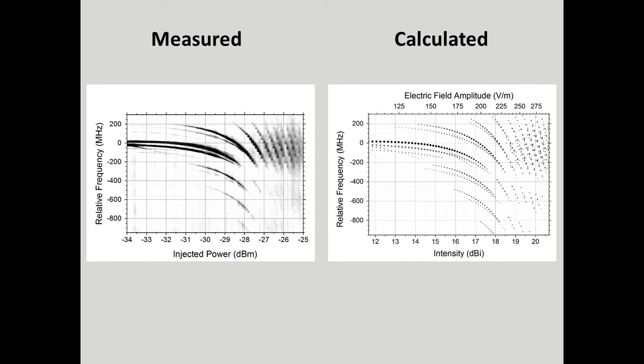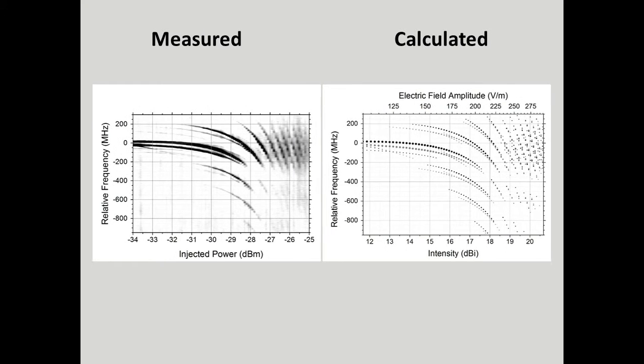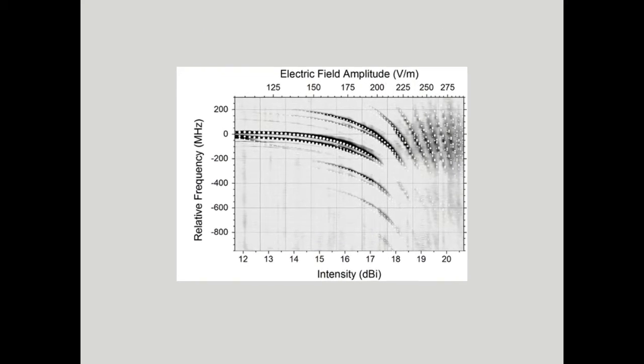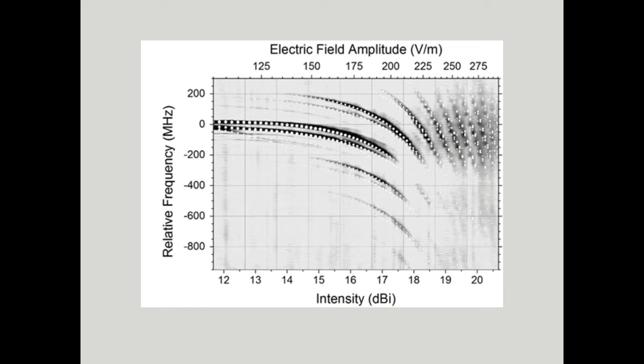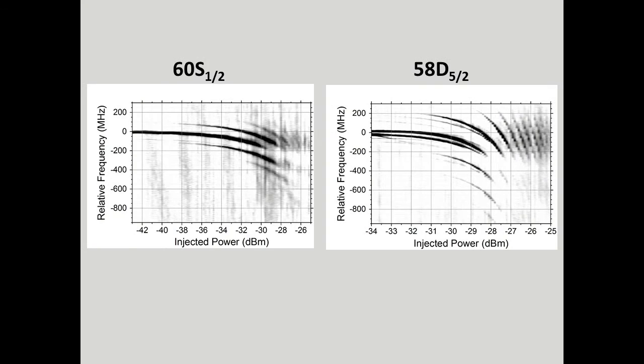By comparing the calculated map with the measured map, we are able to determine what field strength is reached at the center of the cell, as well as an upper bounds on the precision of the measurement. Depending on which state we choose to optically drive, we are able to see different features, allowing us different levels of precision.